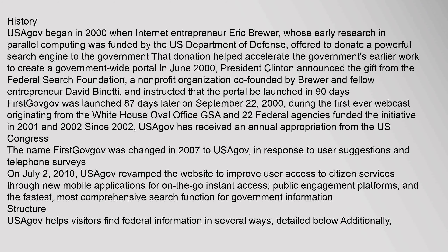during the first-ever webcast originating from the White House Oval Office. GSA and 22 federal agencies funded the initiative in 2001 and 2002. Since 2002, USAGov has received an annual appropriation from the U.S. Congress. The name FirstGov.gov was changed in 2007 to USAGov.